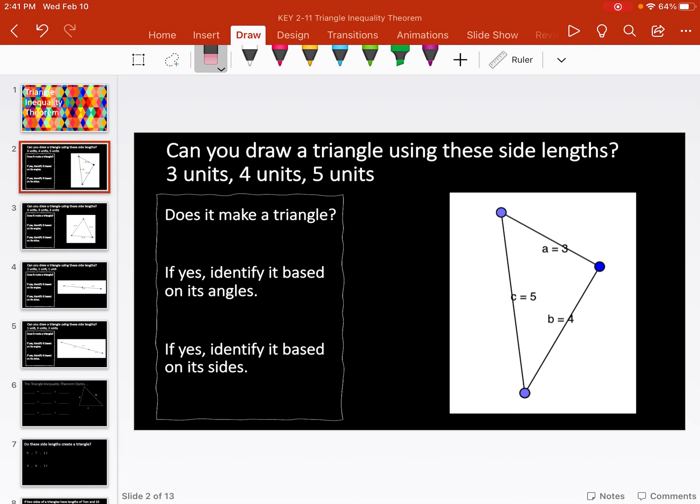This is just my answer key version where I've already created them. It's asking, can we make a triangle out of the side lengths 3, 4, and 5? I went ahead and used that website and created that triangle. So does it make a triangle? Yes, it does.